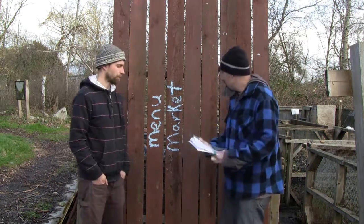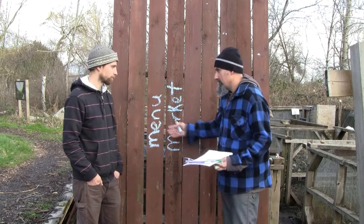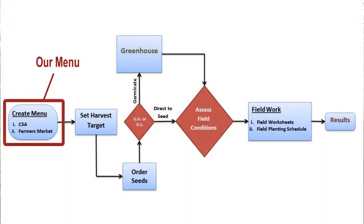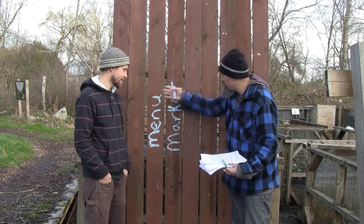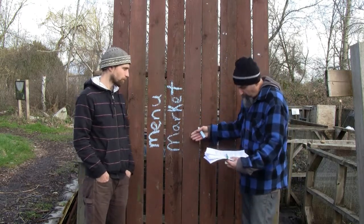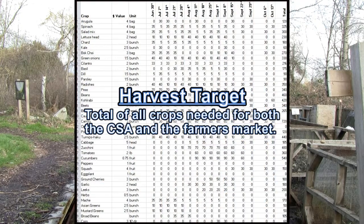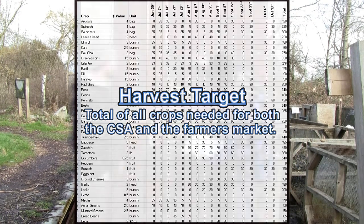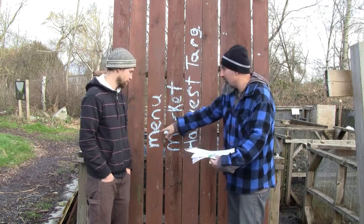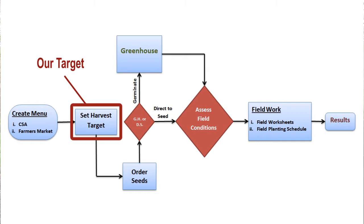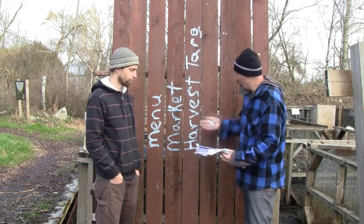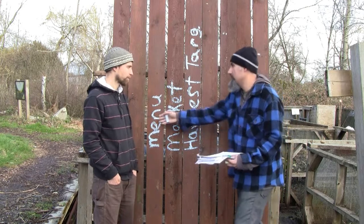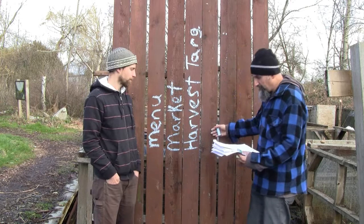So those two things — the CSA menu and the market menu — are basically your product, part of your business plan, what you're producing. The next thing in the spreadsheet, because this is what you want to produce and get out, is your harvest target. This is what you have to harvest to be able to supply your customers. So this next section is your harvest target, which is basically those two menus plus or minus a certain amount depending on what's happening. And then the next sheet is basically your field work — what you need to do to meet your harvest target so you can supply your customers.